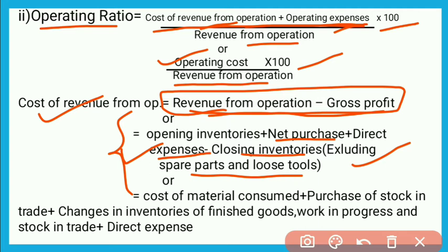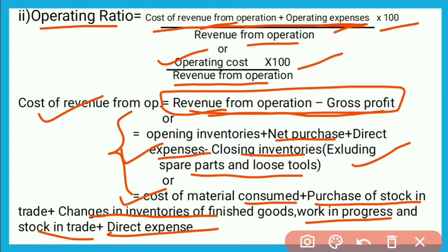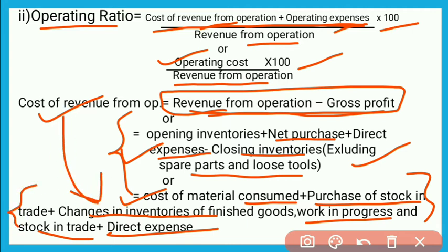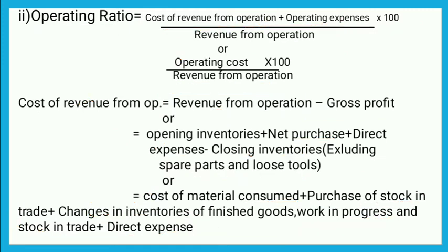अगर इस formula के according भी cost of revenue from operations find करने के लिए information नहीं दी है तो third formula apply करेंगे: Cost of Material Consumed + Purchase of Stock in Trade + Changes in Inventories of Finished Goods, Work-in-Progress and Stock in Trade + Direct Expenses। इस formula से cost of revenue from operations find कर सकते हैं।